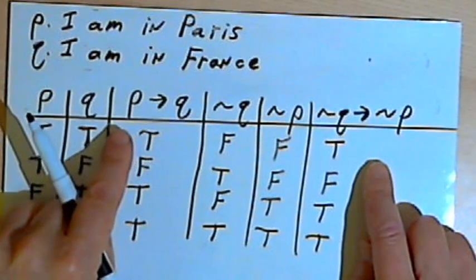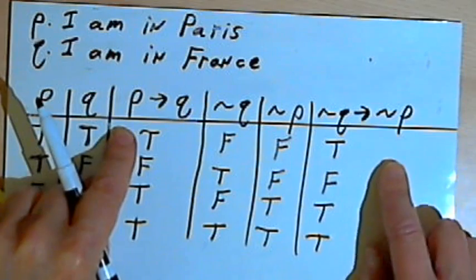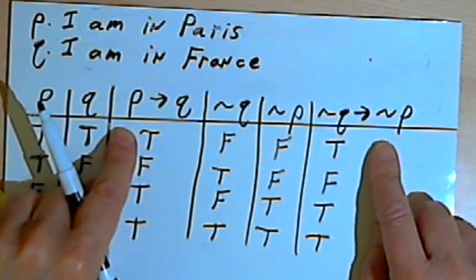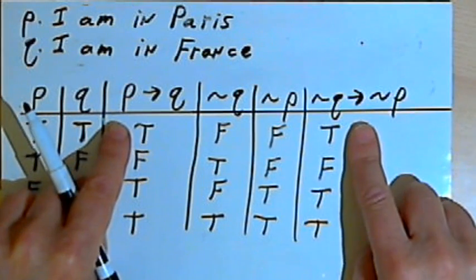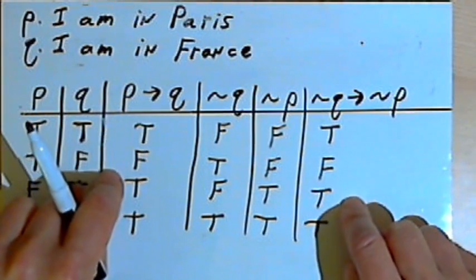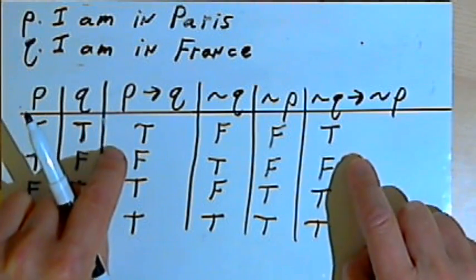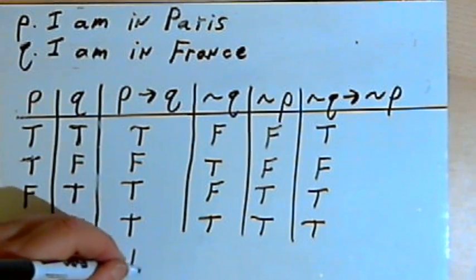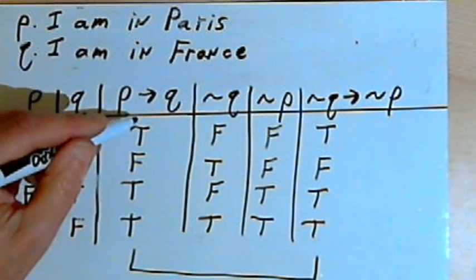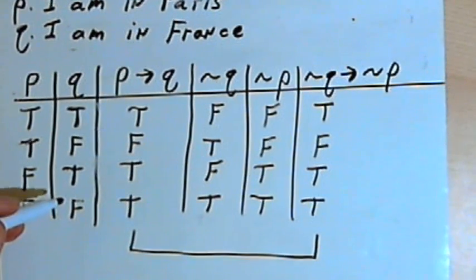Now if I compare the columns for the original conditional, if P then Q, and the contrapositive, if not Q then not P, I see I have exactly the same truth values in the same order. I have true for both of them, then false, then true, then true. Which means that both a conditional and its contrapositive are logically equivalent.